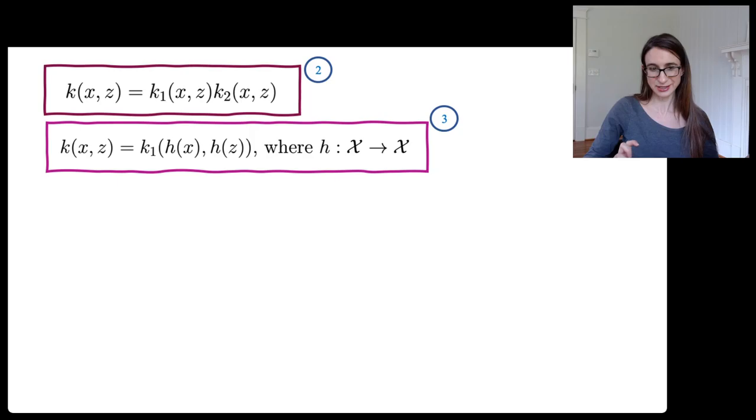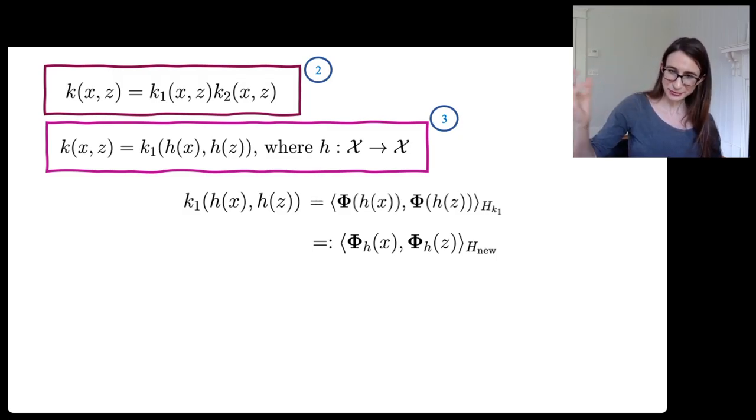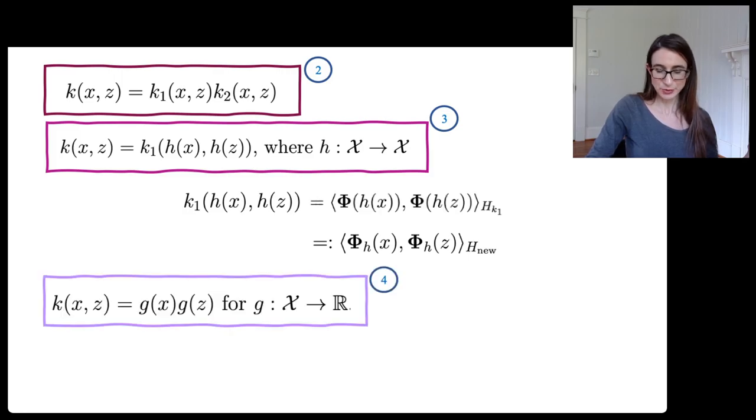Now this one is very easy to prove because you can think of H as like a preprocessing step. You take X and you take Z, you map them through H and then you send them through Phi for K1's reproducing kernel Hilbert space. So you can write K1 as just sending you through Phi and then not only do you get sent through Phi, but you get sent through H first. So you just kind of build H into Phi and then call it your new feature map. And so therefore you have a valid feature map and therefore this new K1 of H(X), H(Z), that is now an inner product, which means K is an inner product.